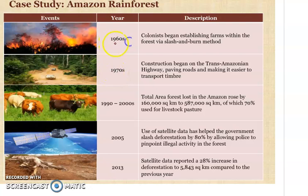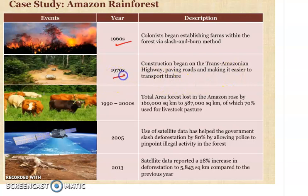In 1960, colonists began establishing farms within the forest via slash and burn methods — they burned different forest areas just to get the land. In 1970, construction began on the Trans-Amazonian Highway, paving roads and making it easier to transport timber, which also led to a lot of deforestation. From 1990 till 2000, the total forest area lost in the Amazon rose by 160,000 square kilometers to 587,000 square kilometers, of which 70% was used for livestock pasture.